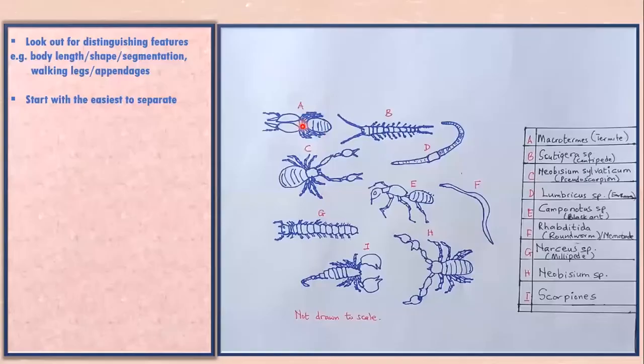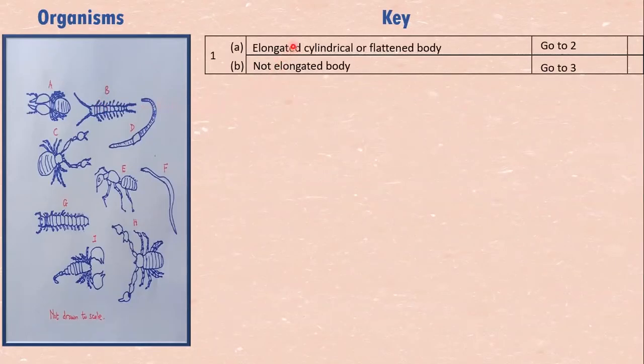The rest, A, C, E, H, I, they are not elongated. So we can have elongated ones and not elongated ones.